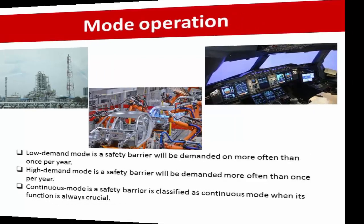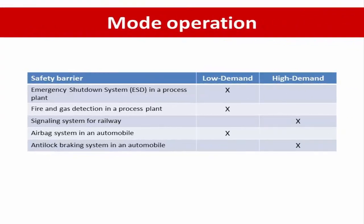This example table shows the classification of safety barriers into low demand and high demand. For example, the ESD system is classified as low demand. Fire and gas detection in a process plant is classified as low demand. Signaling systems for railways are classified as high demand. The airbag system in a car is classified as low demand, and the anti-lock braking system in an automobile is considered high demand.